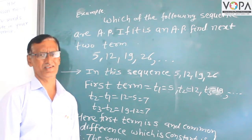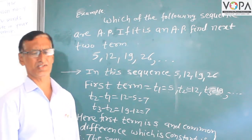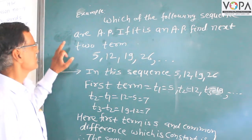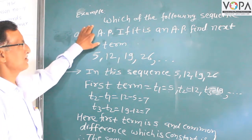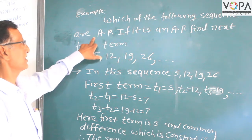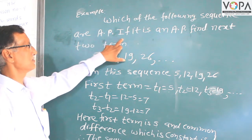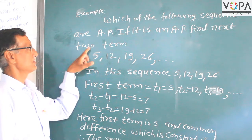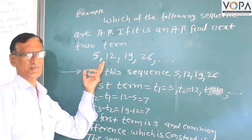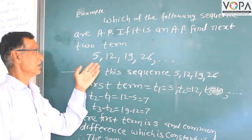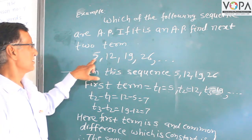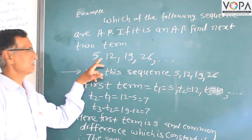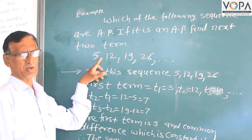You will learn sequence and arithmetic means. An example of arithmetic means is AP — which of the following sequences are AP? Arithmetic means the difference between two consecutive terms is constant. This sequence is called the AP.